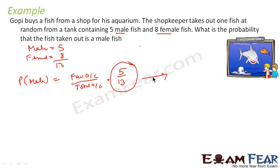Very simple. You have male fish and you have female fish. The favorable outcome for male is 5, and total number of outcomes is 5 plus 8, that is 13.